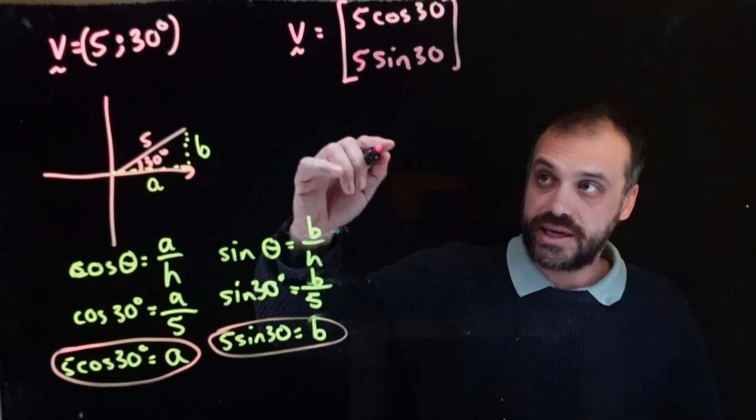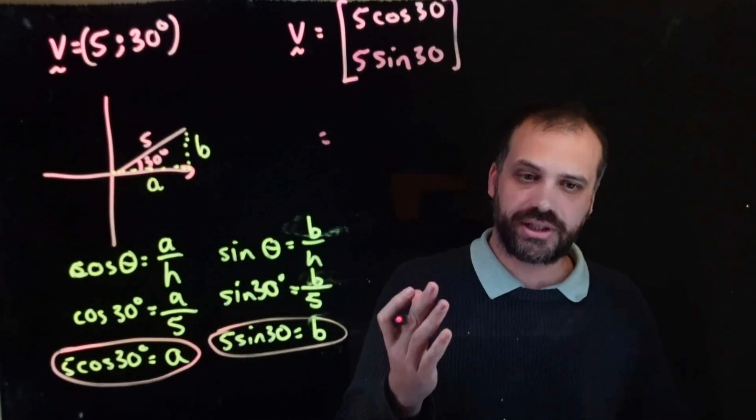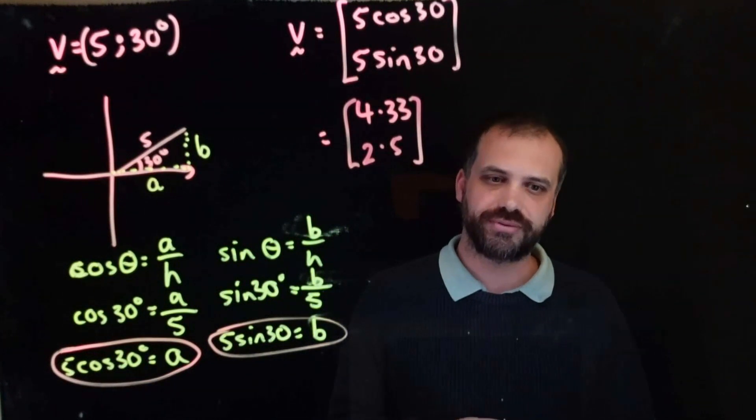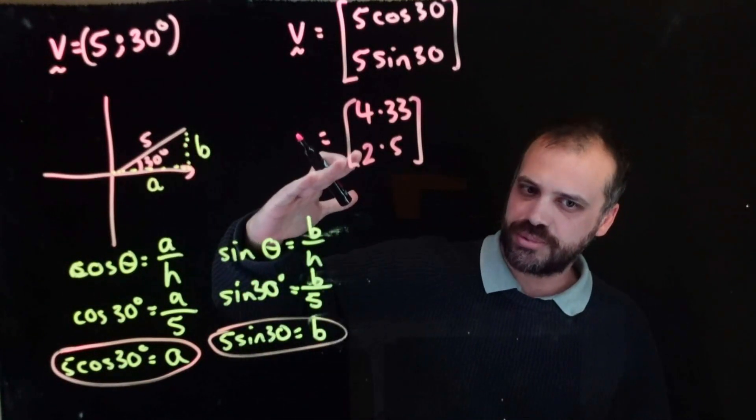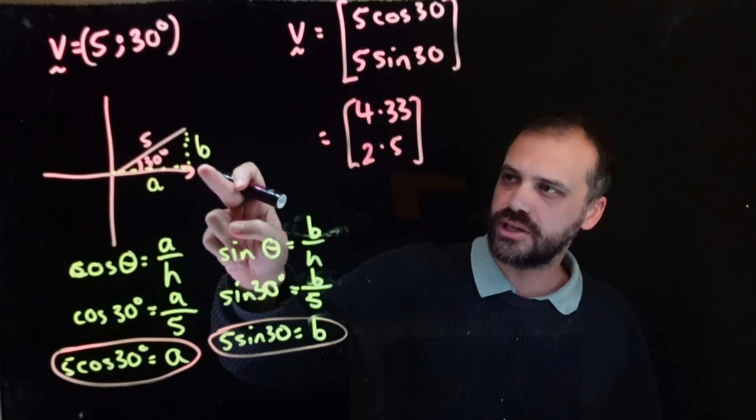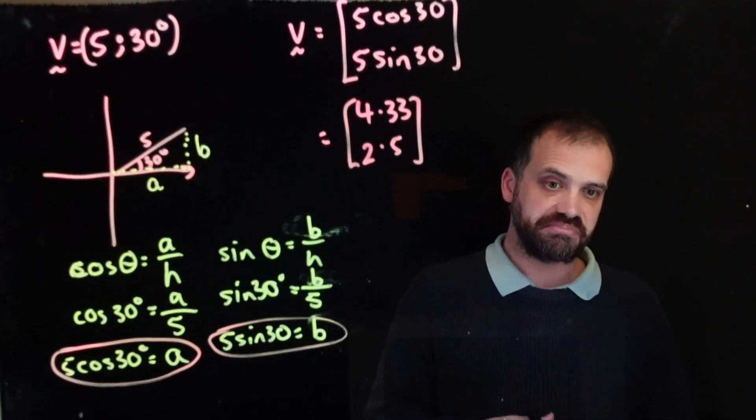Now, of course, I can type it into my calculator. I'll do it now. All right, 4.33, 2.5. Does that make sense? Well, it's not too steep of an angle. It's 5 long here. And so, I'm saying it's 4.3 long here and 2.5 up. That feels right.